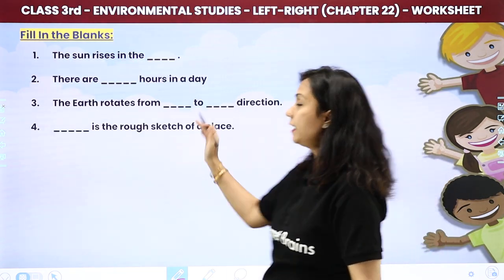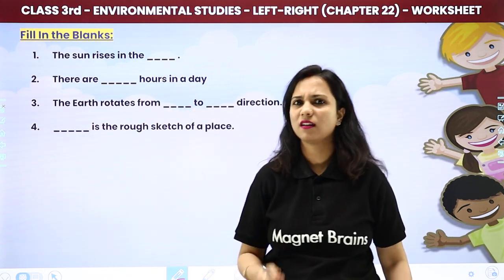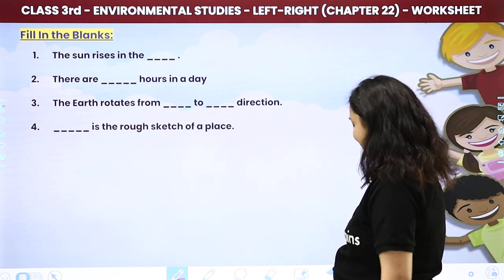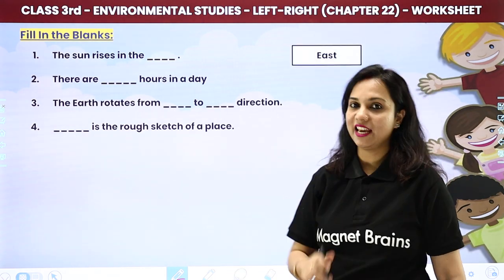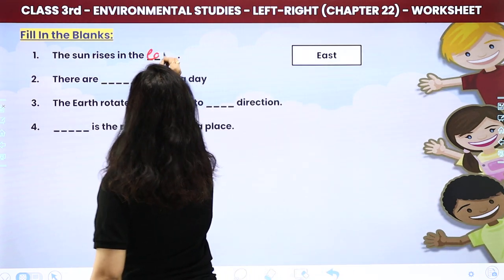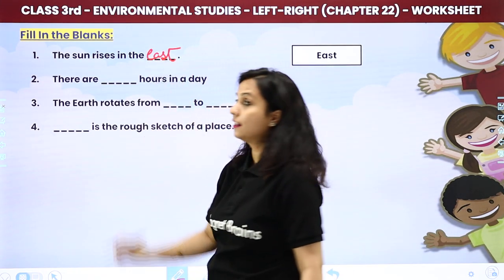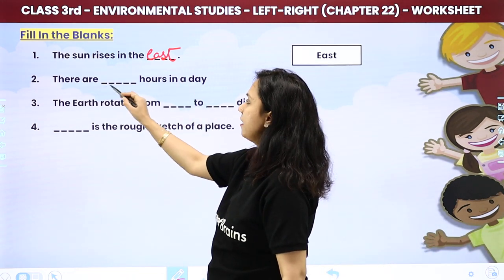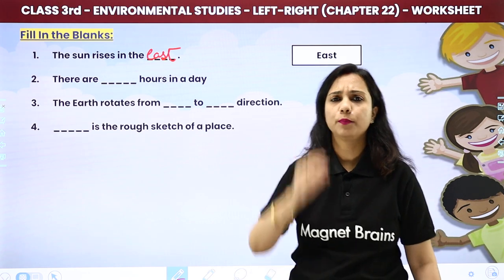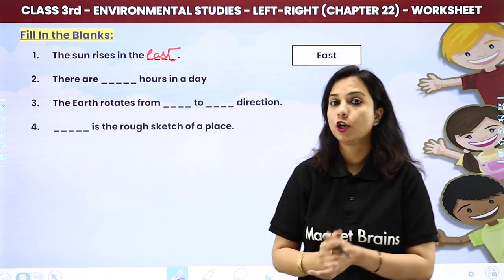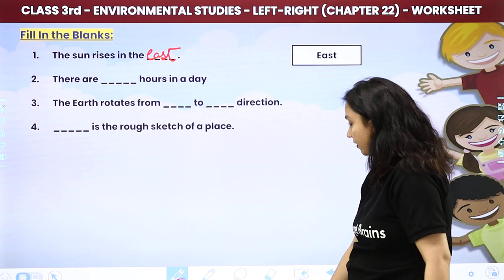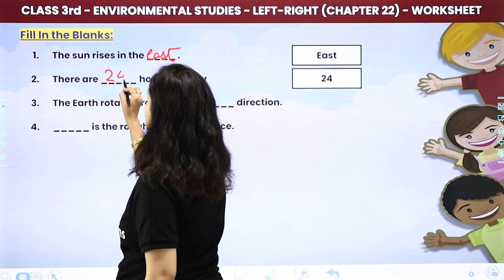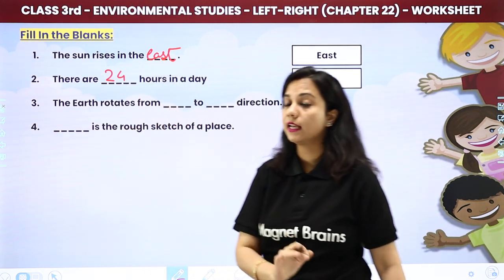Fill in the blanks. The sun rises in the — where does the sun rise? Sun rises in the east and sets in the west, so the answer is east. There are dash hours in a day — how many hours are in a full day? The answer is 24 hours in a day.